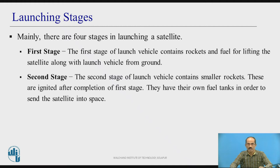The first stage of the launch vehicle contains rockets and fuel for lifting the satellite along with the launch vehicle from the ground. The first stage involves only lifting the satellites from the ground. The second stage starts after the first stage. The second stage of the launch vehicle contains smaller rockets, which are ignited after completion of the first stage. They have their own fuel tanks in order to send the satellites into space.